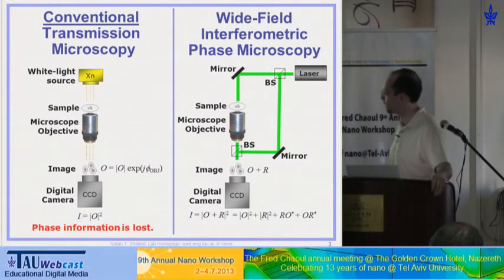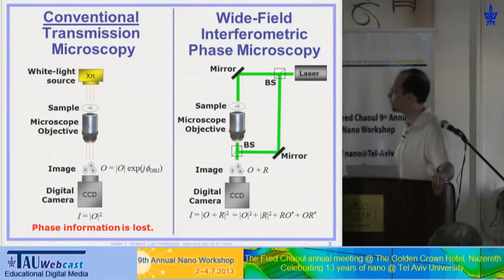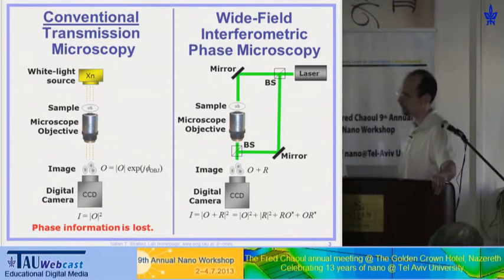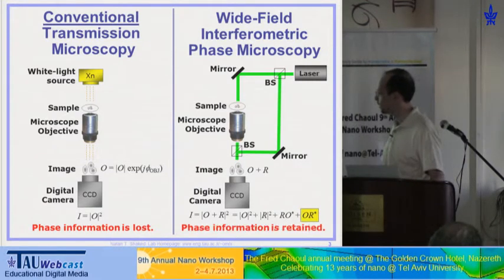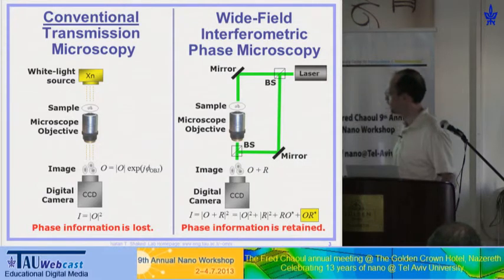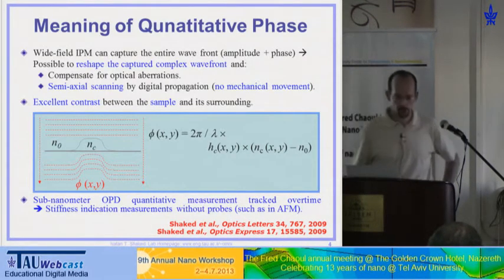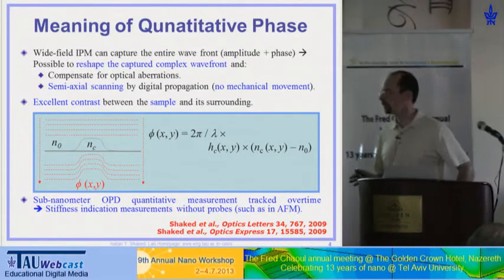If these four elements are separated in space — for example by inducing a small angle between the reference arm and the object arm — I am able to retrieve the object information including amplitude and phase in a single camera exposure with no scanning involved. The phase information is retained in this interferogram, and I am able to record quantitative phase.